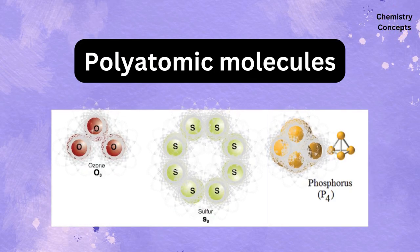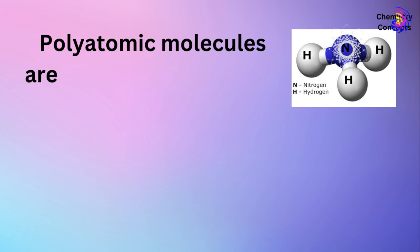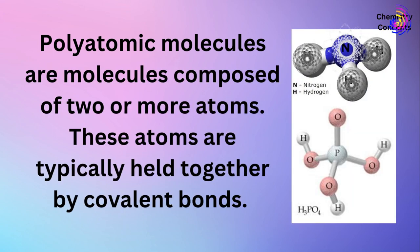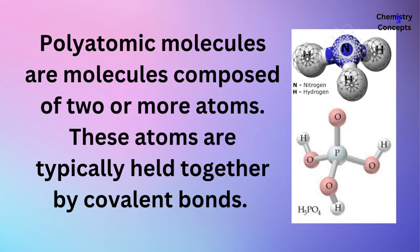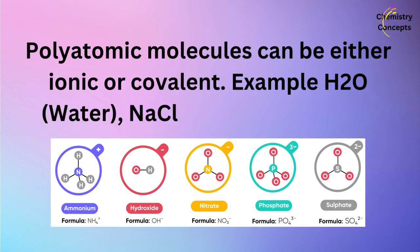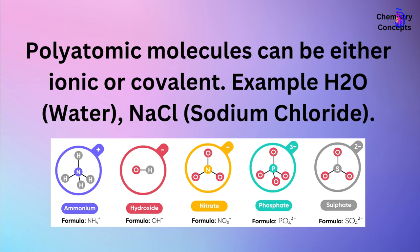Polyatomic molecules are molecules composed of two or more atoms. These atoms are typically held together by covalent bonds. Polyatomic molecules can be either ionic or covalent. Examples include H2O (water) and NaCl (sodium chloride).